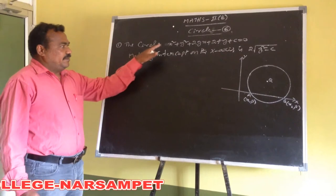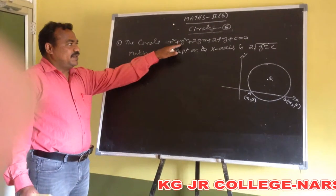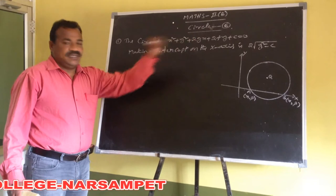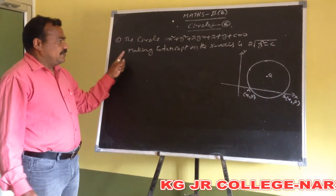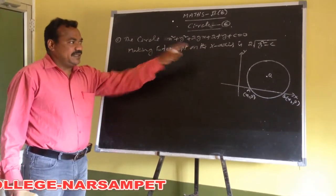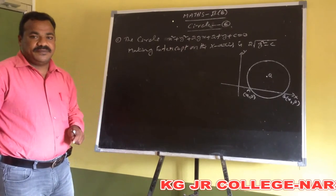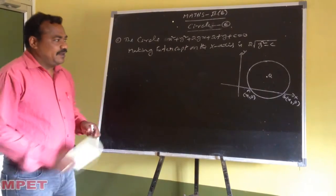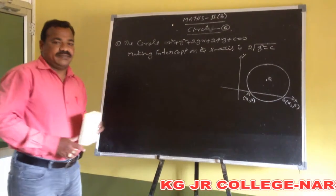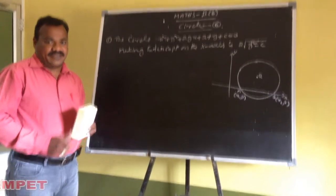The circle equation is x square plus y square plus 2gx plus 2fy plus c is equal to 0. The circle making intercept on the x-axis is 2 into root of g square minus c. Now, the circle is making intercept on the x-axis.